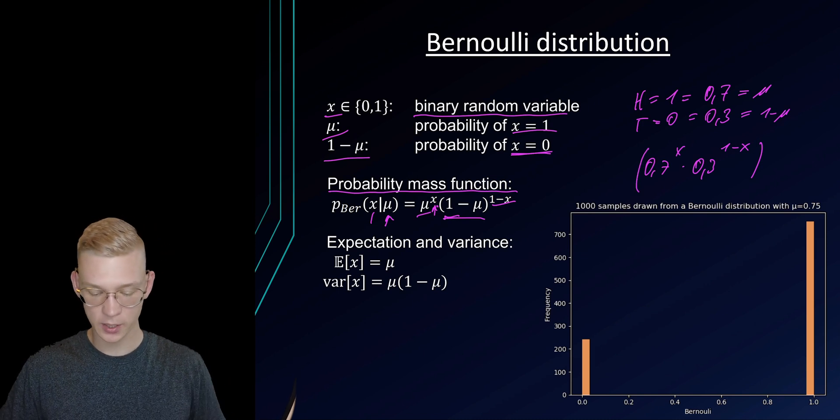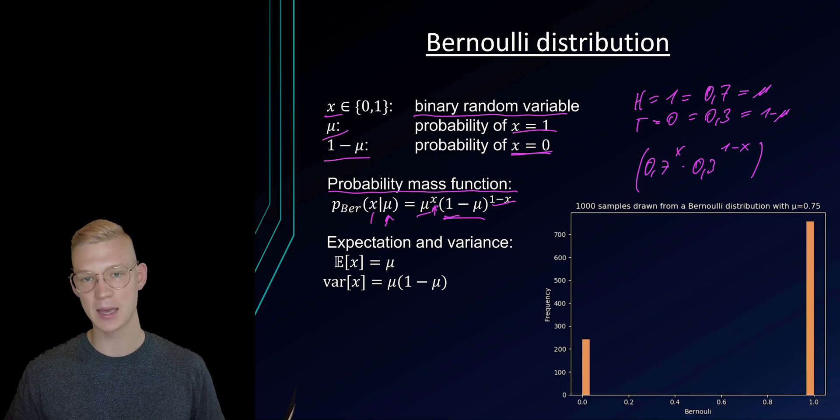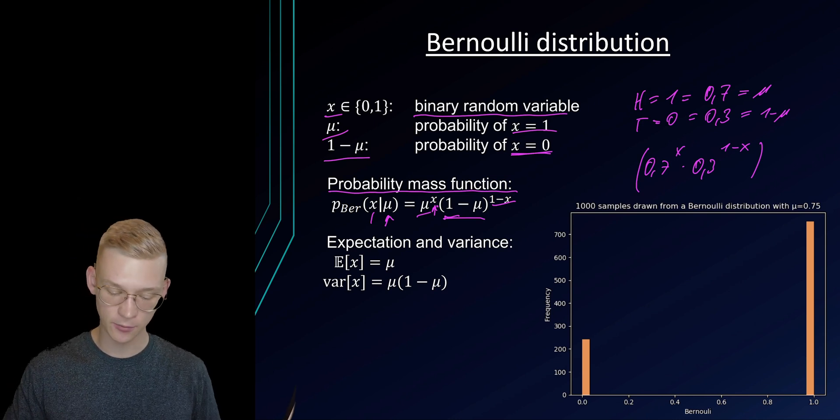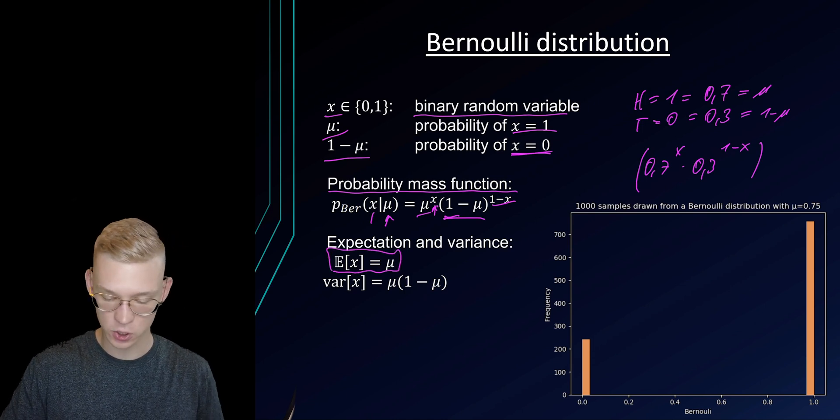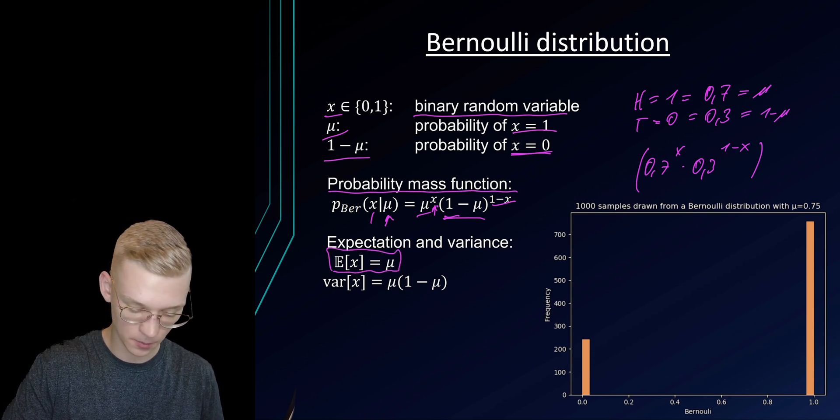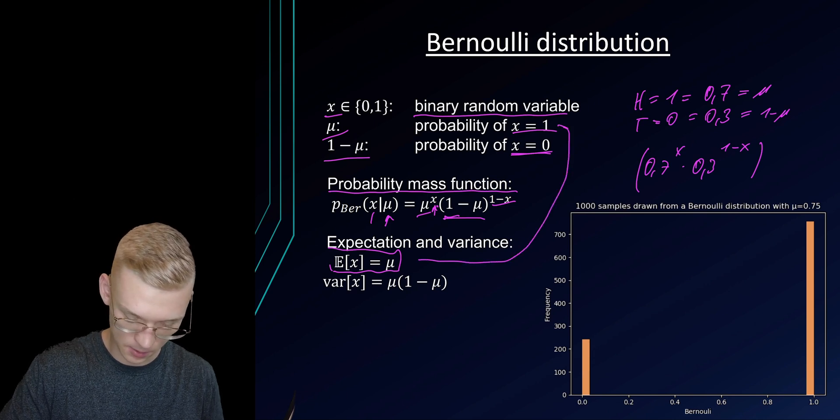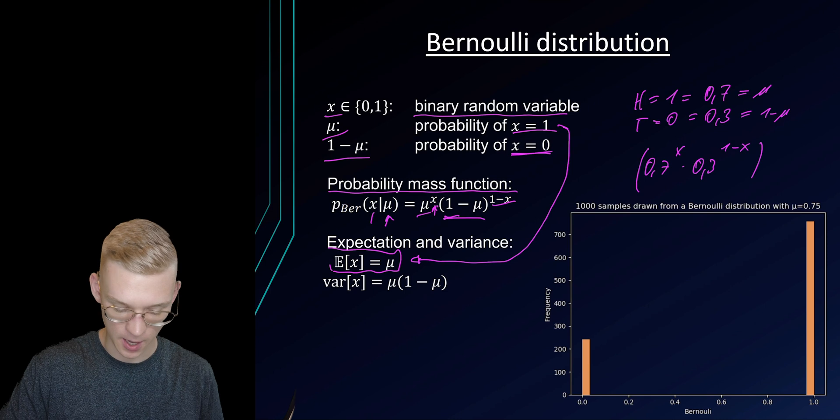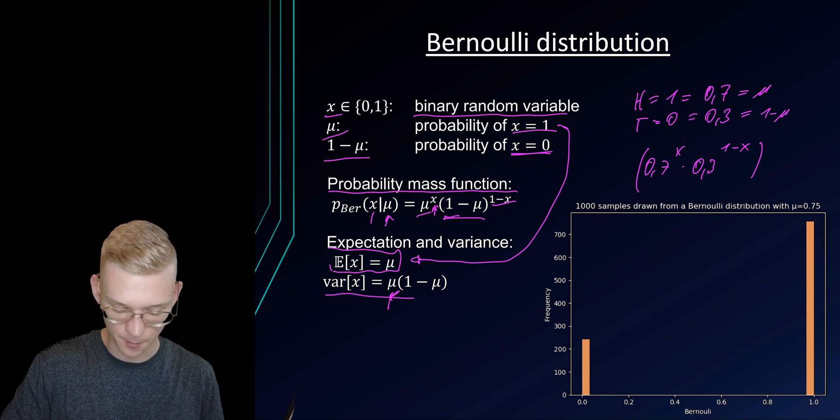And now we can also say, well if we have this probability mass function, because it's a mass function and not a density function because this is a discrete case, we can say that we expect on average the value mu because x is 1. This comes from here and our variance is mu times 1 minus mu.